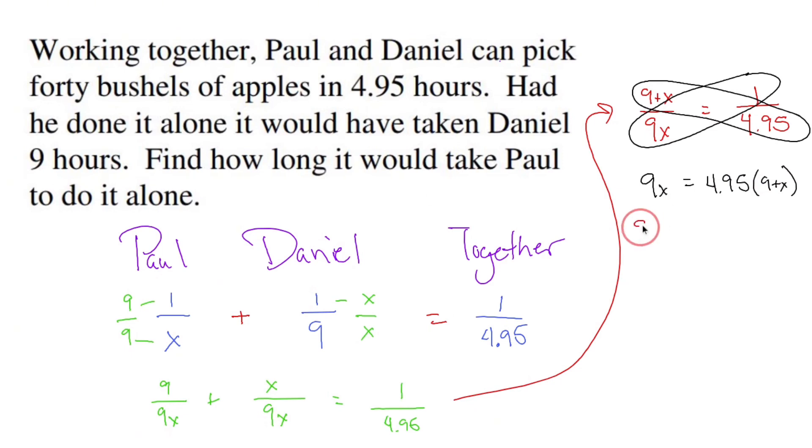So that doesn't change the left side, but the right side becomes 44.55 after I multiply 4.95 times 9, plus 4.95x.